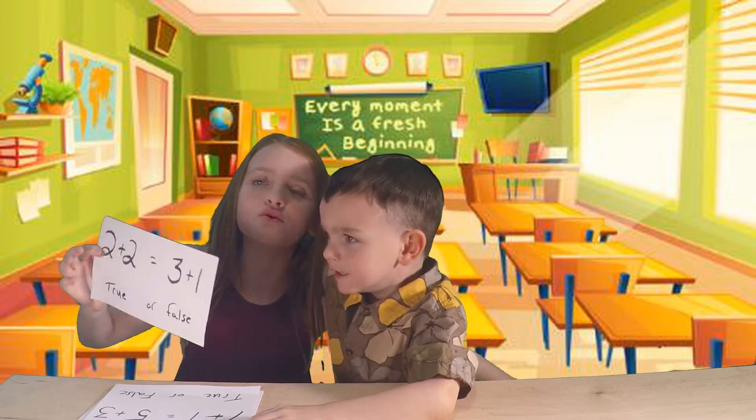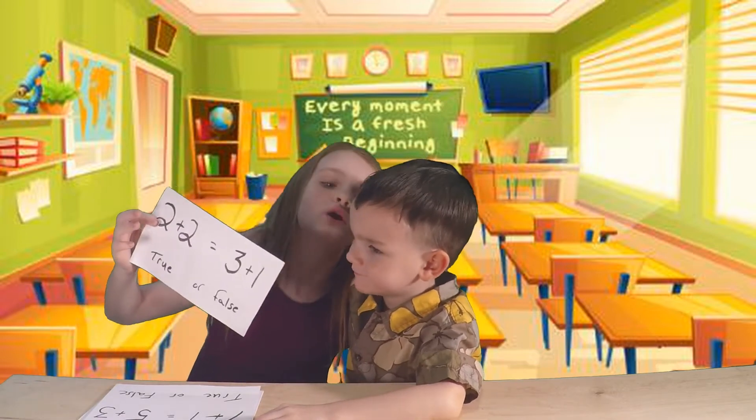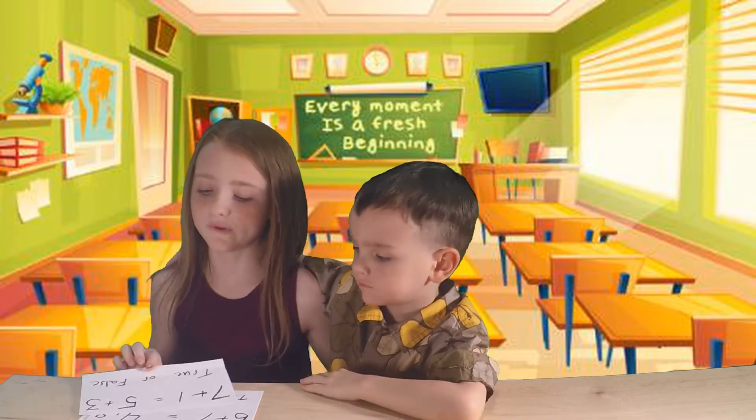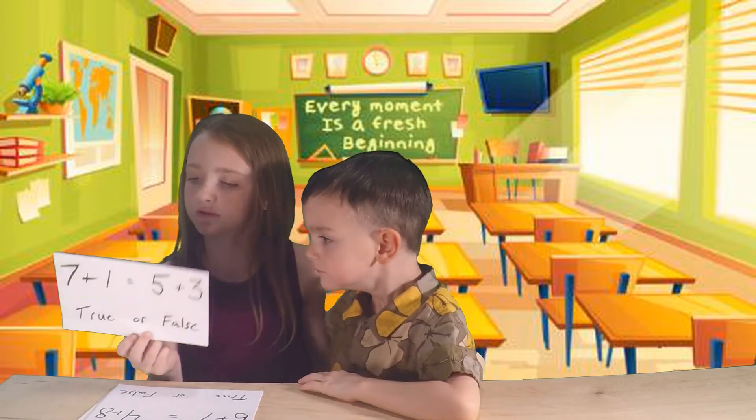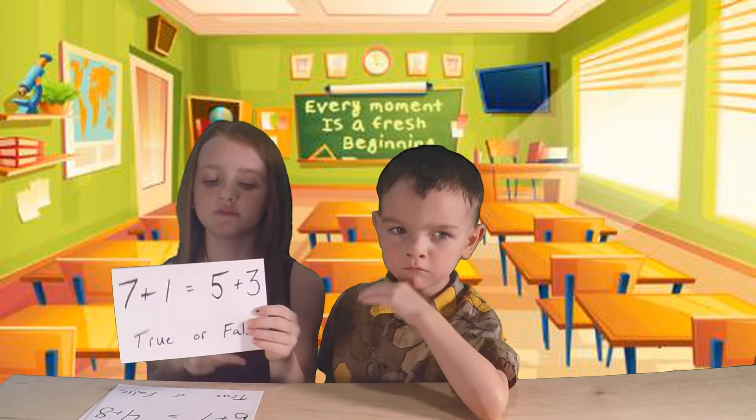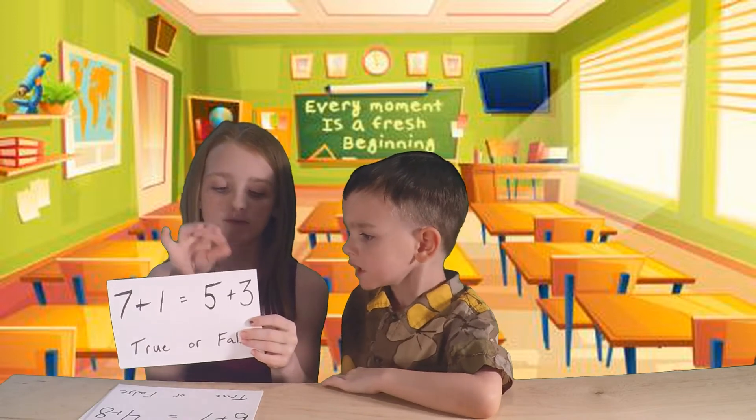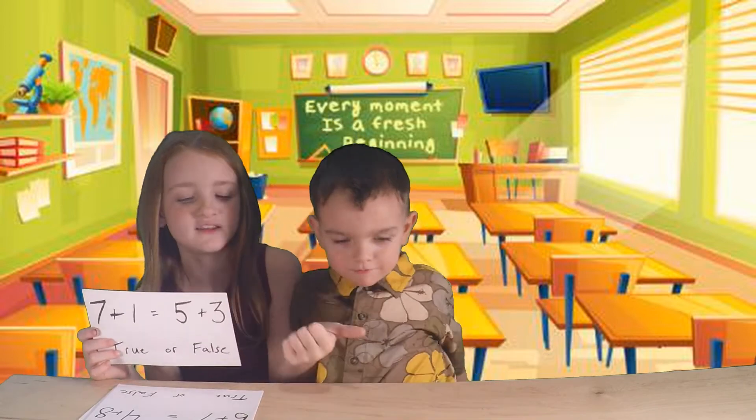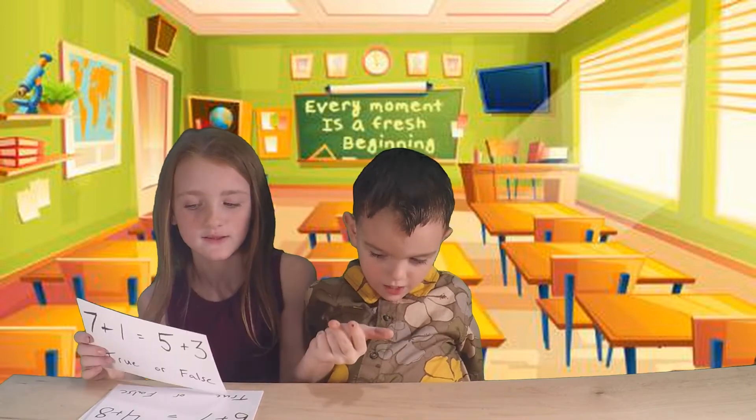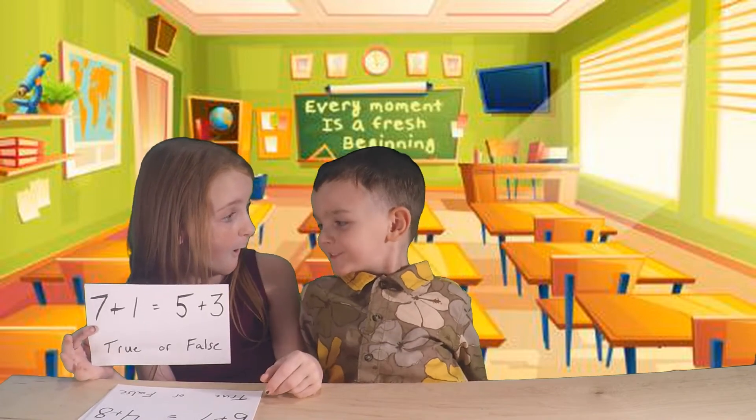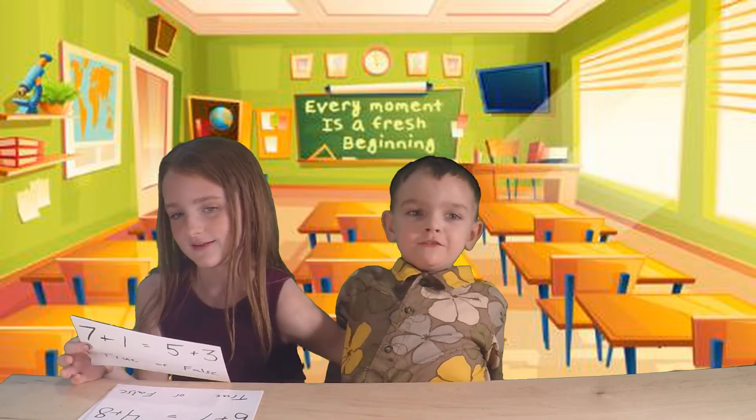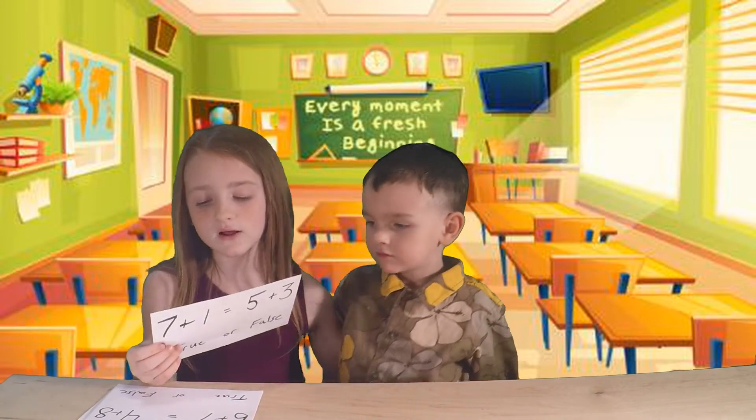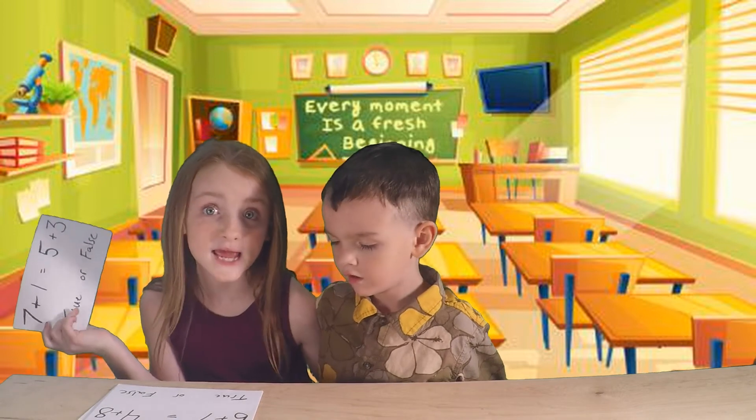Is seven plus one equal the same as five plus three? Eight. Seven plus one is eight and five plus three is eight, so it is true.